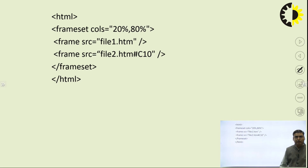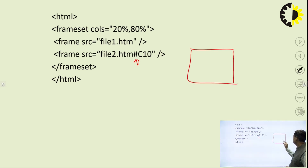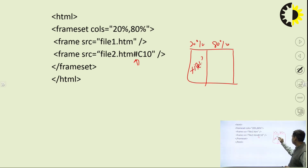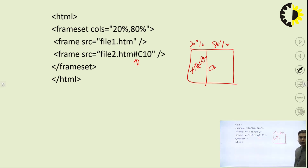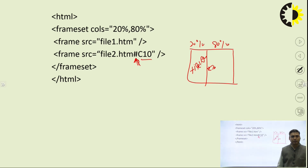If you want to jump to a particular section within a file, you can use the hash symbol. For example, the frameset divides columns into 20% and 80%; the first displays file1.html. For the second frame, you write file2.html#chapter10, which means it will immediately move to the chapter10 label within file2.html. So the hash symbol indicates jumping to a specific label within a file — the label must be defined in the target file.